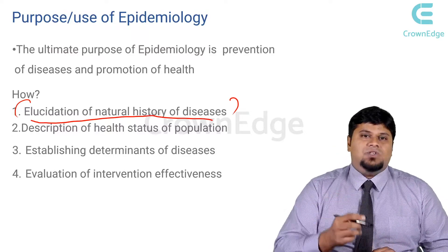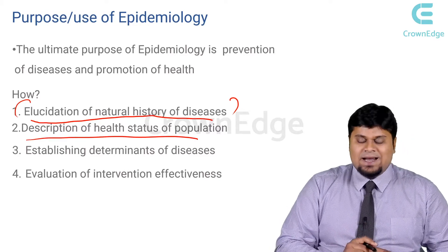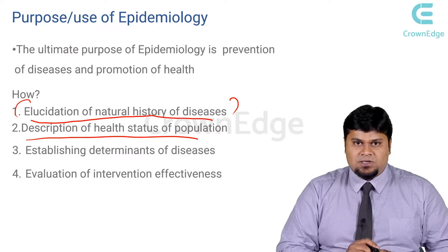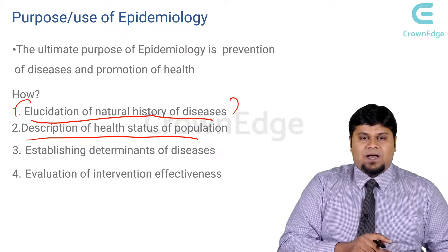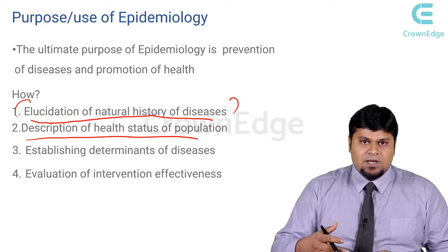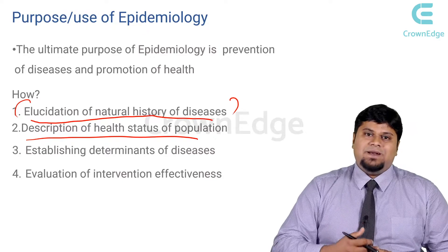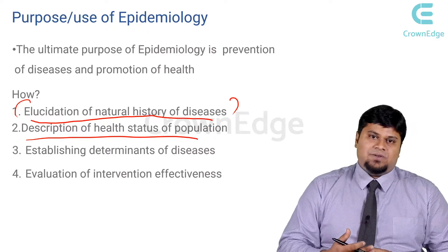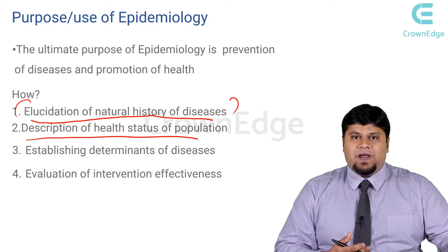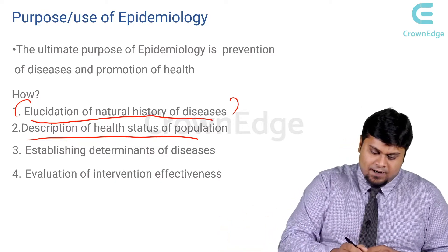The second important thing is it describes the health status of a population. Today we understand how healthy or how diseased every population or cohort is only when we collect the data or statistics. All this is done by describing the status of a population in epidemiological terms — for example, the rate, the ratio, and the proportion, which I'll be discussing in the future slides.